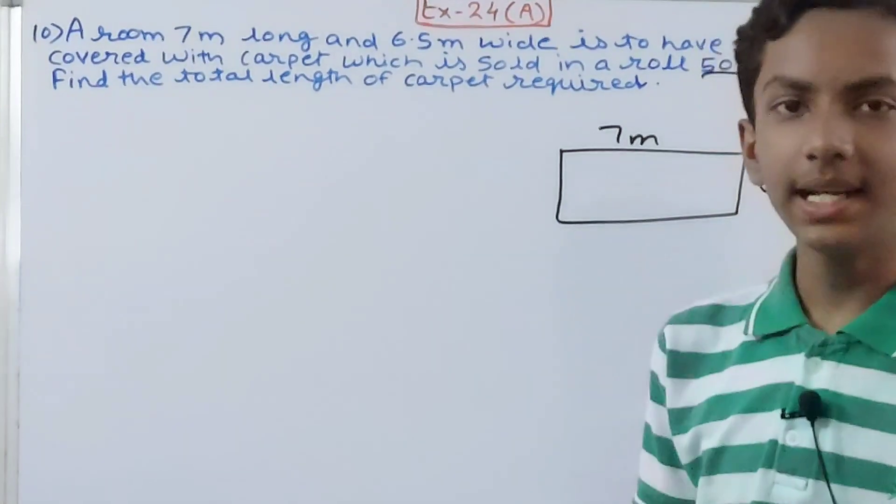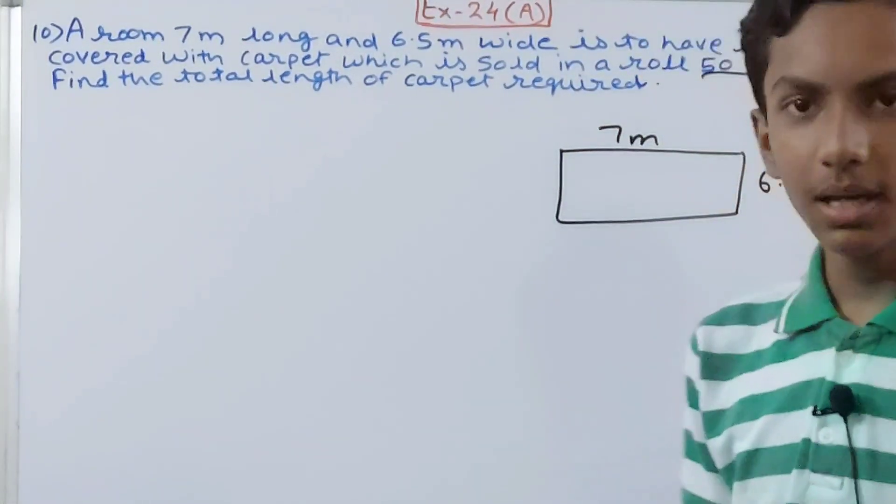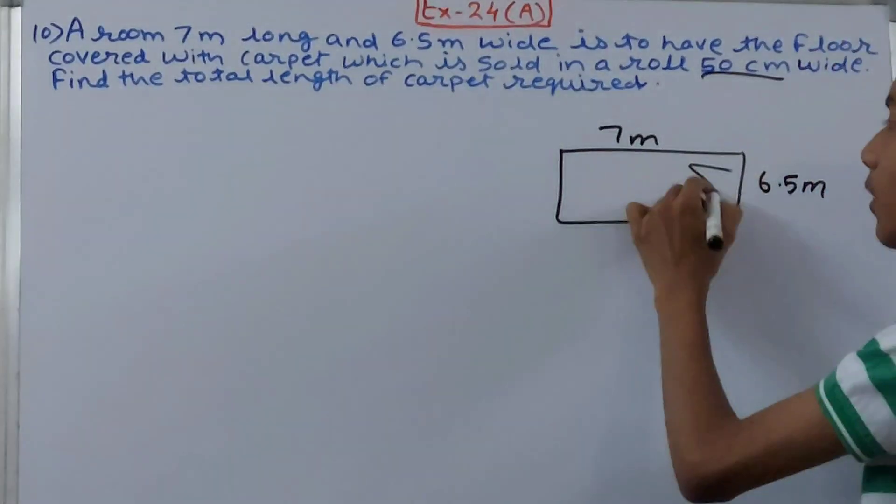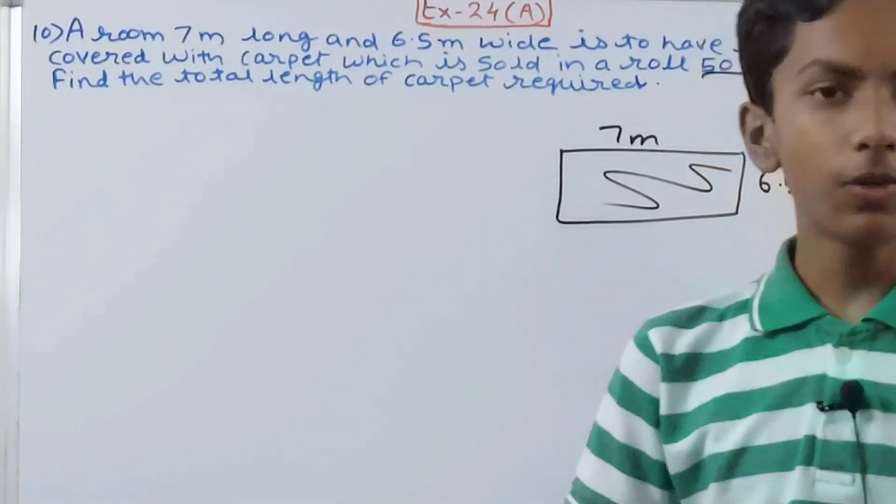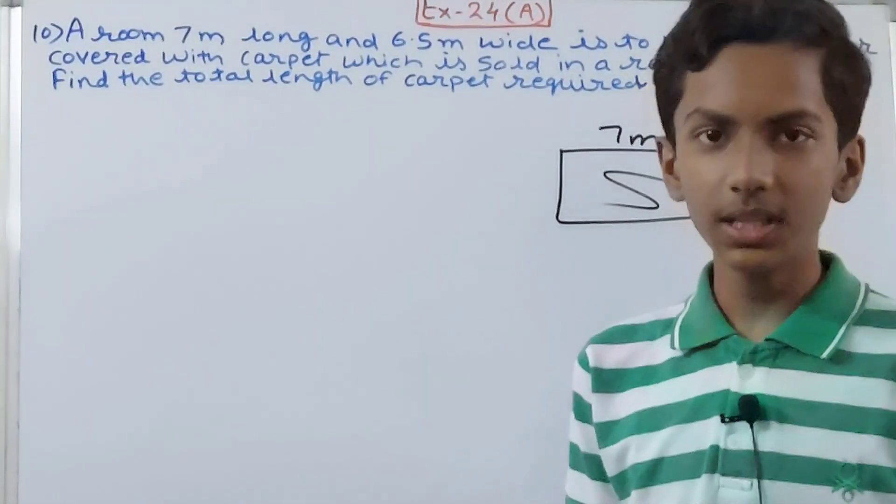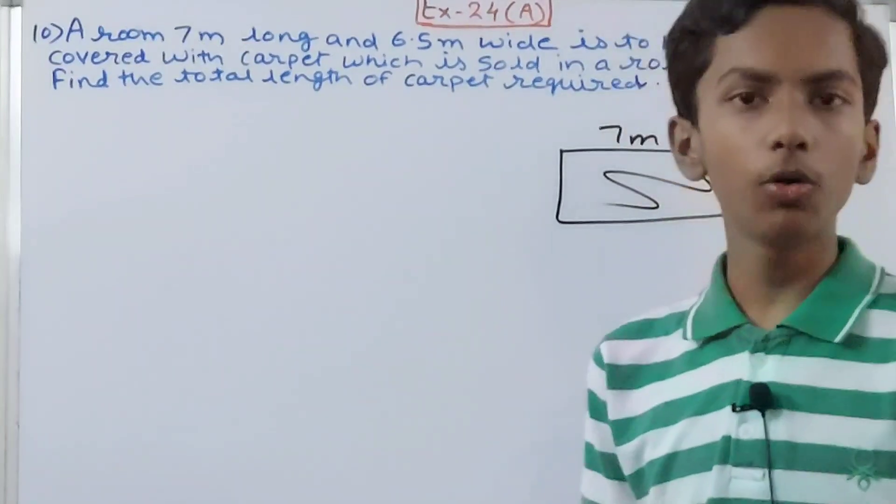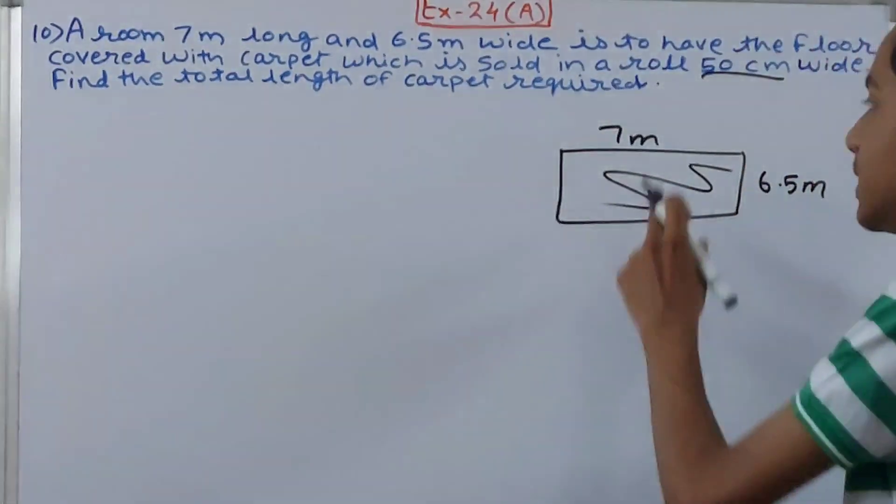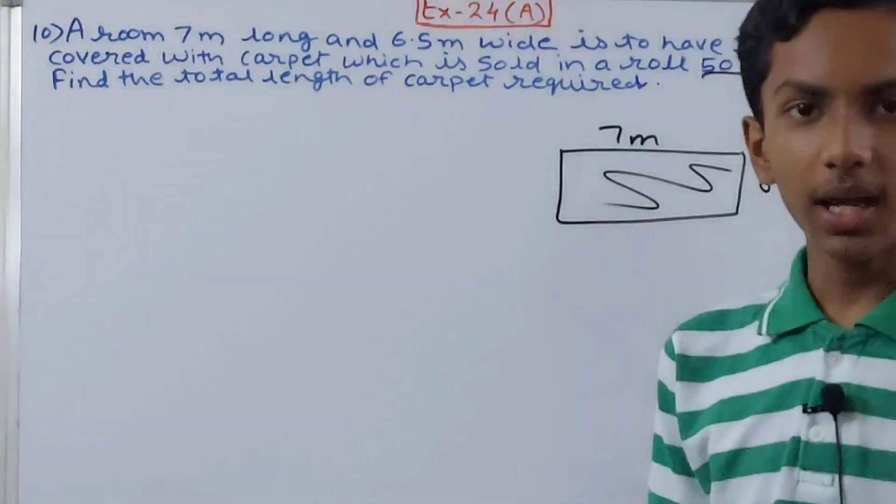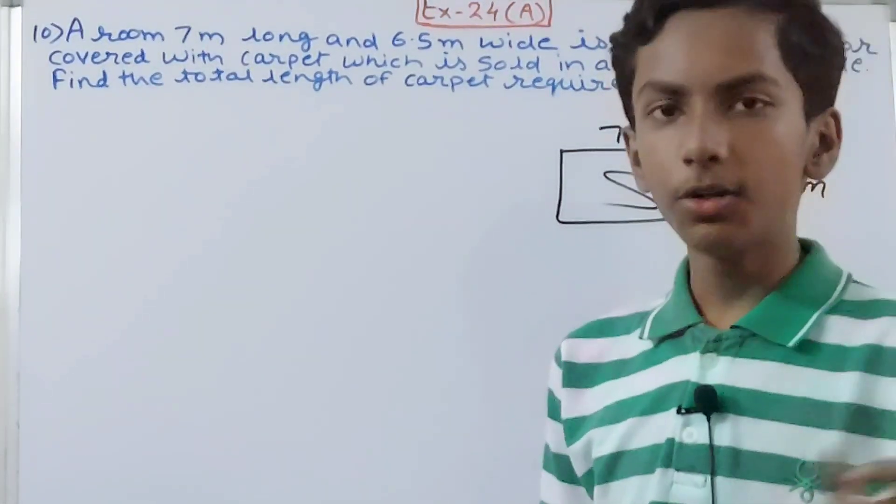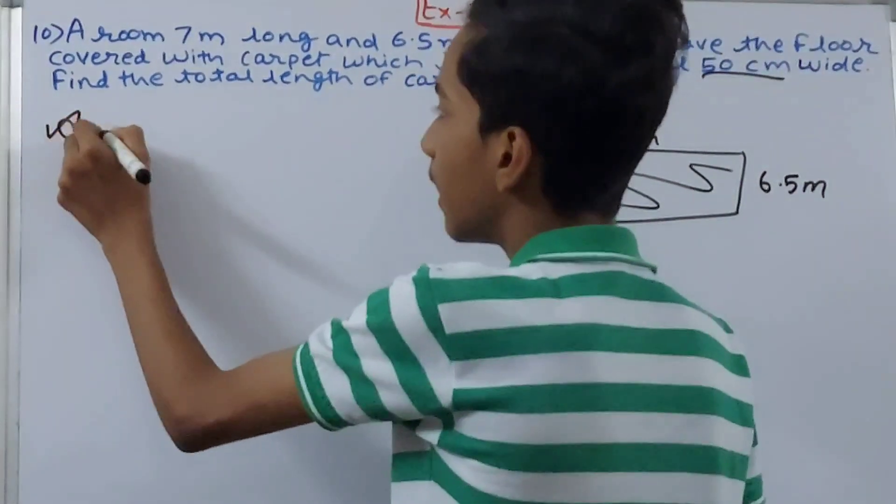How will we find the number of rolls? By using the same method - area of the floor and area of the roll. Area of the roll will be 50 into 50 centimeters. For the floor, we will convert 7 meters and 6.5 meters. Their area will come in square meters, then convert square meters into square centimeters.